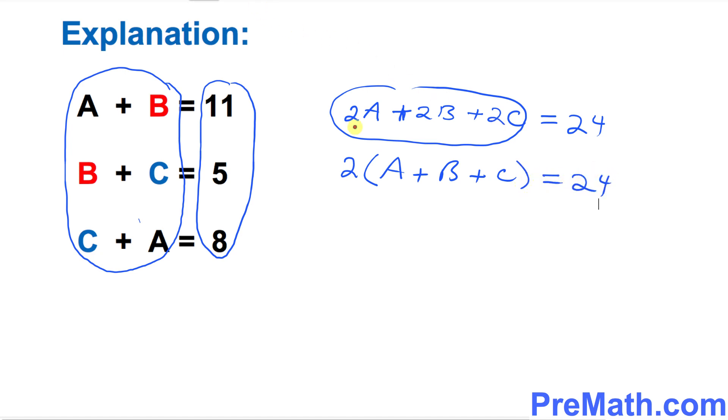Now if you divide both sides by 2, so this 2 and 2 is gone, so that means a plus b plus c equals 12. And that is our answer.